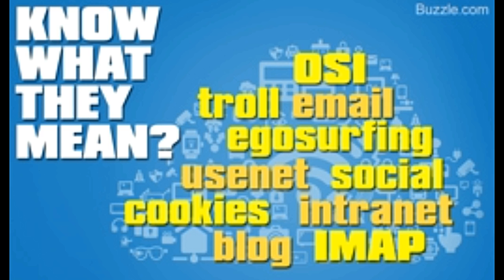Internet, a network of networks and an enormous information base, is a complex structure of physical and logical entities. By definition, the internet is a network of networks that interact with each other through exchange of data packets, hosting an enormous information base and carrying numerous information resources and services. Here is a look at the buzzwords of the internet world — a list of internet terminology.